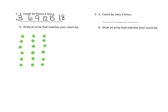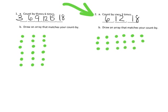If the student wanted to rotate that 90 degrees, as long as they're consistent when they go to the next problem, that's okay. This next problem says count by sixes three times: six, twelve, eighteen. Traditionally we would draw that array as three rows of six dots — and there is our array.